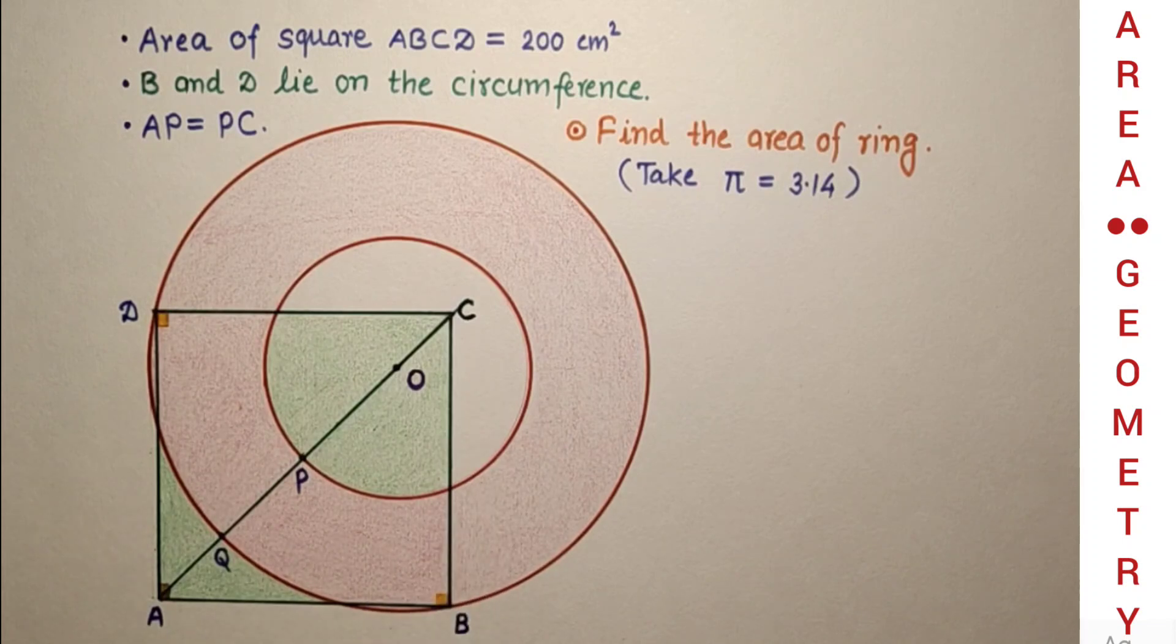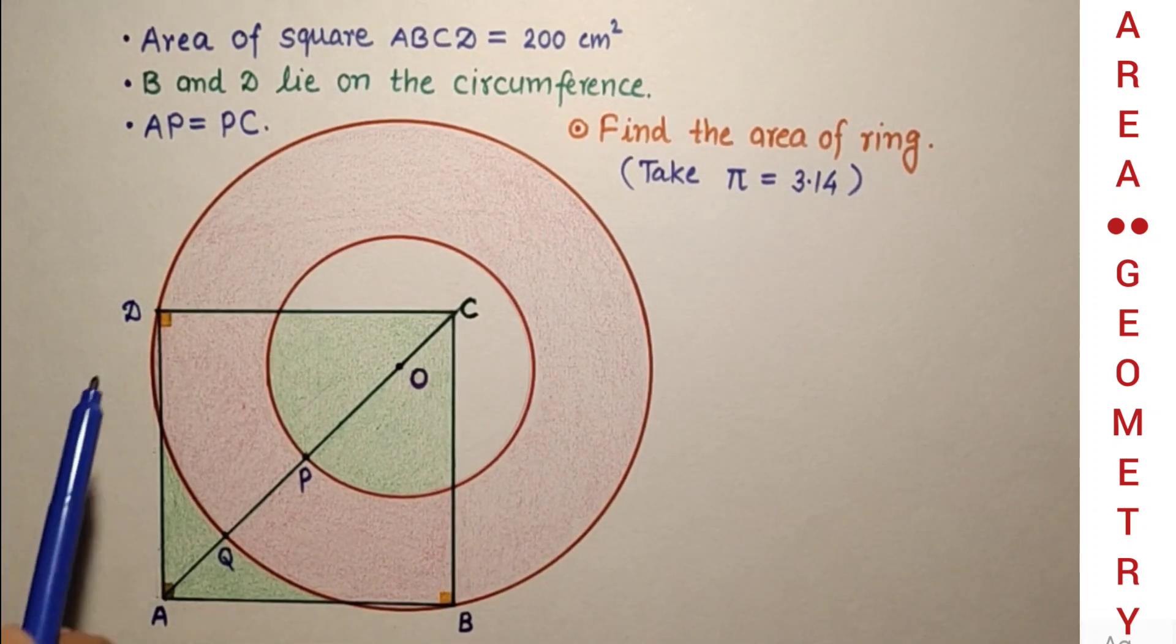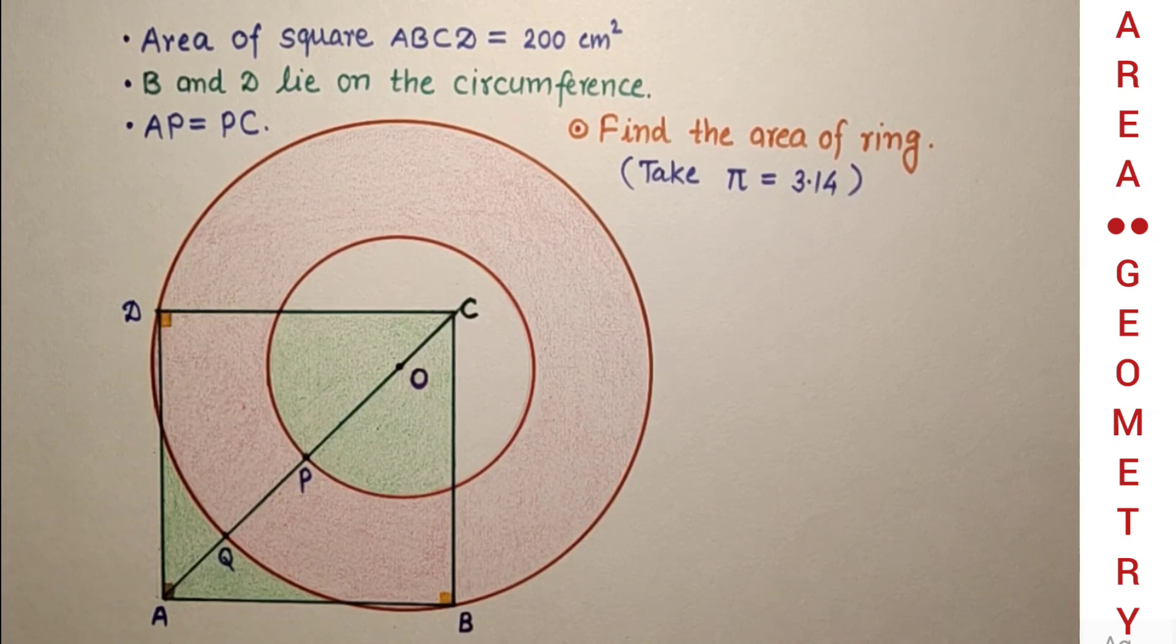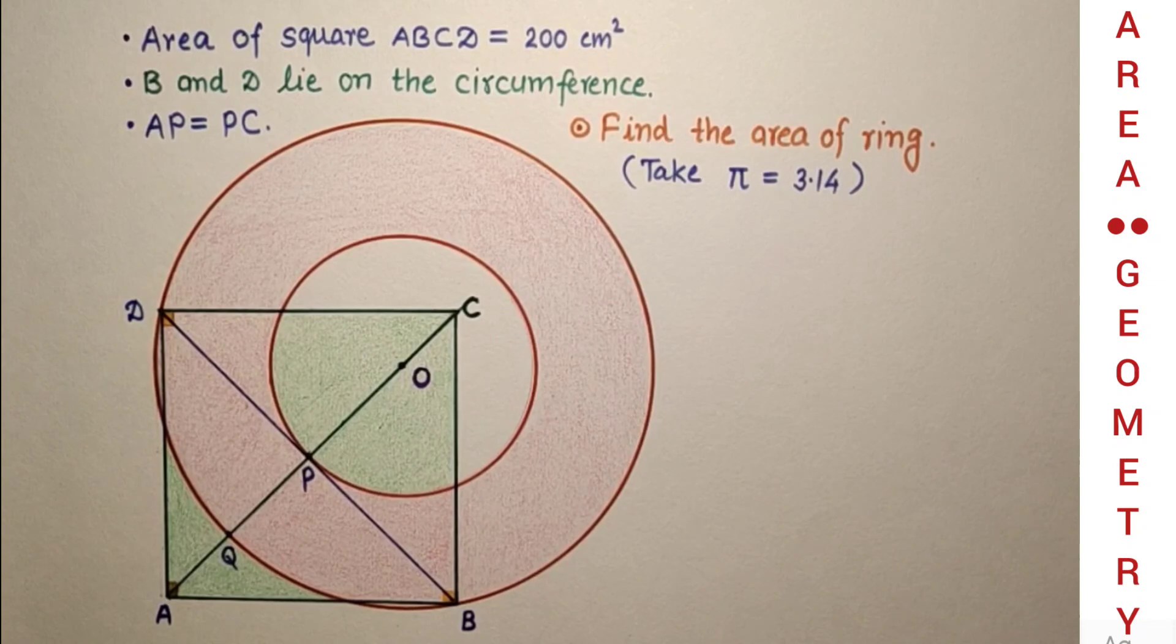If we join diagonal DB, diagonal AC and DB bisect each other at 90 degrees. That means AP, PC, PD, and PB are all equal.